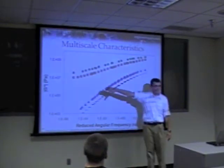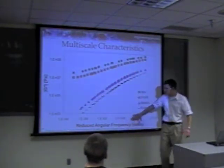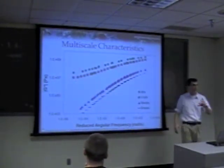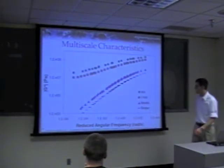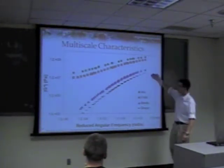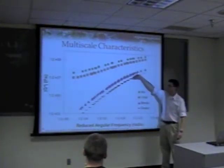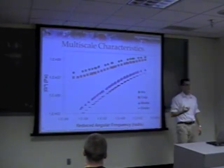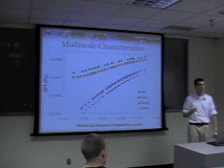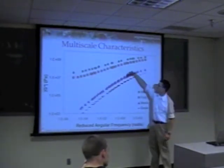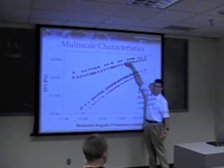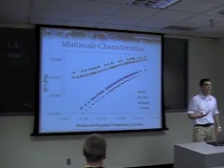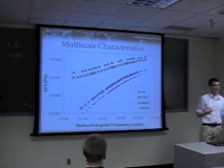Here we're looking at modulus again — frequency on the x-axis — the same modulus curve shown earlier. We see that from binder to mastic, there's not very much change in the mechanical properties of the material. But from mastic to fan, there's a rapid and sudden increase in the modulus.